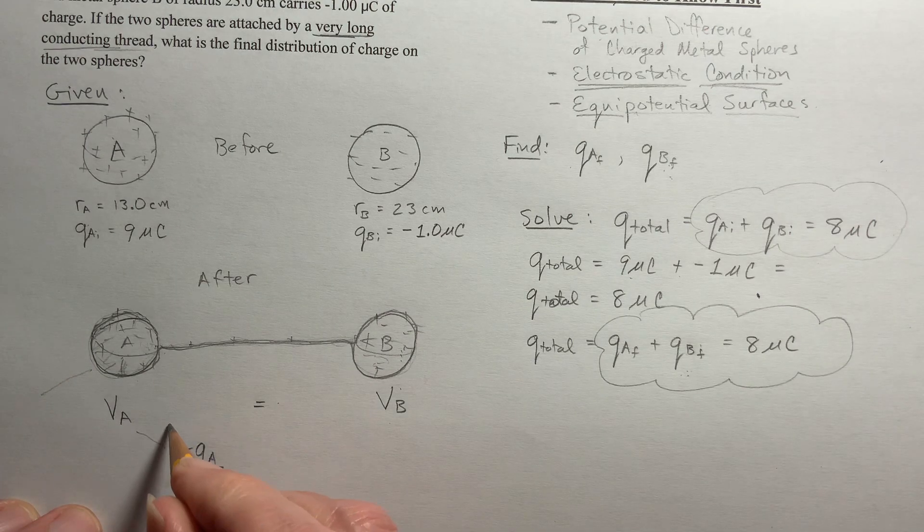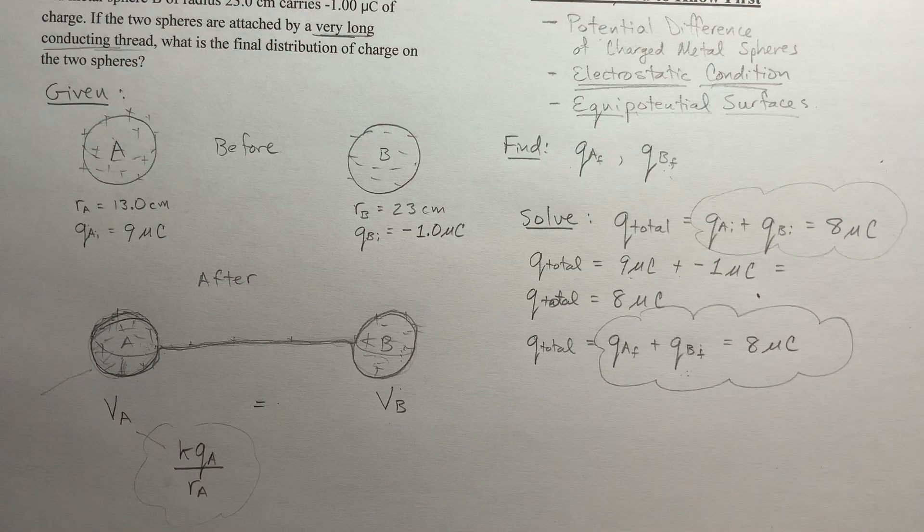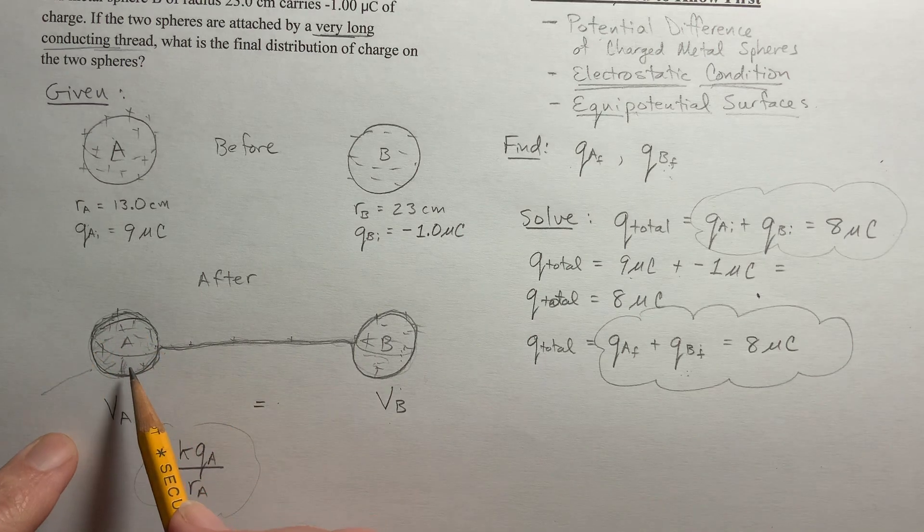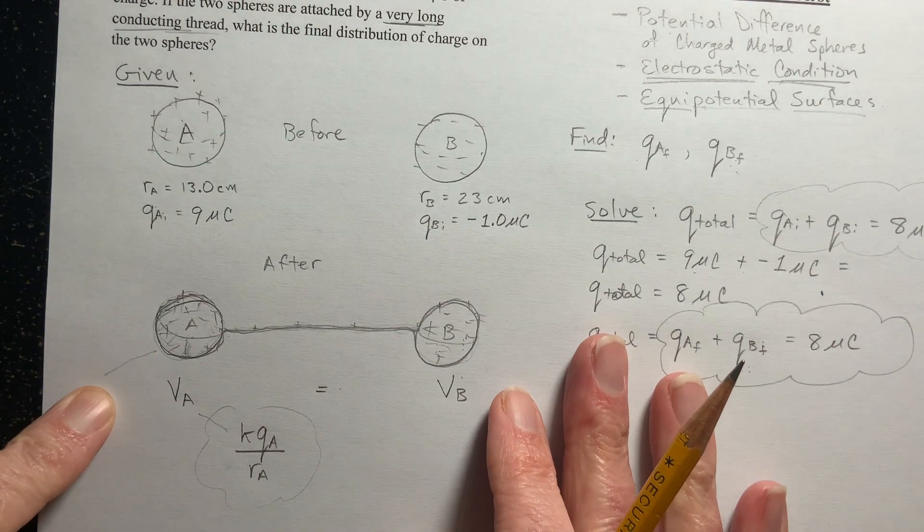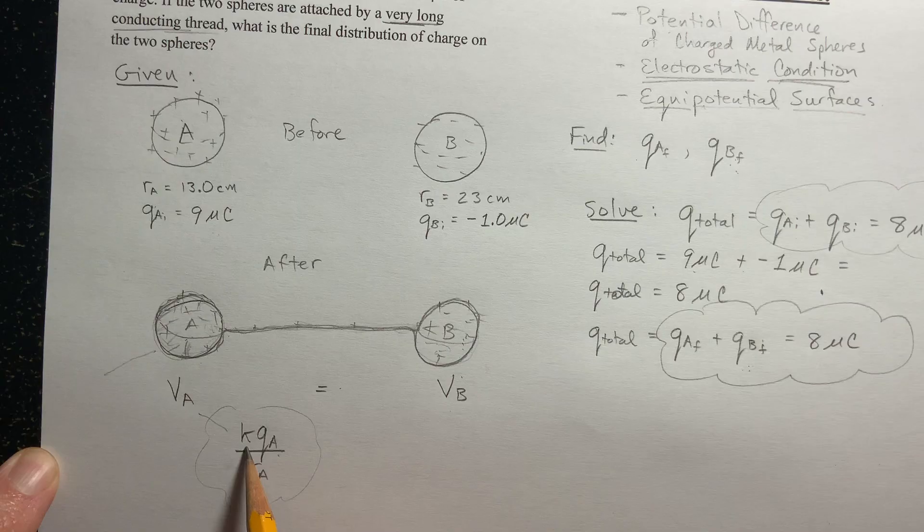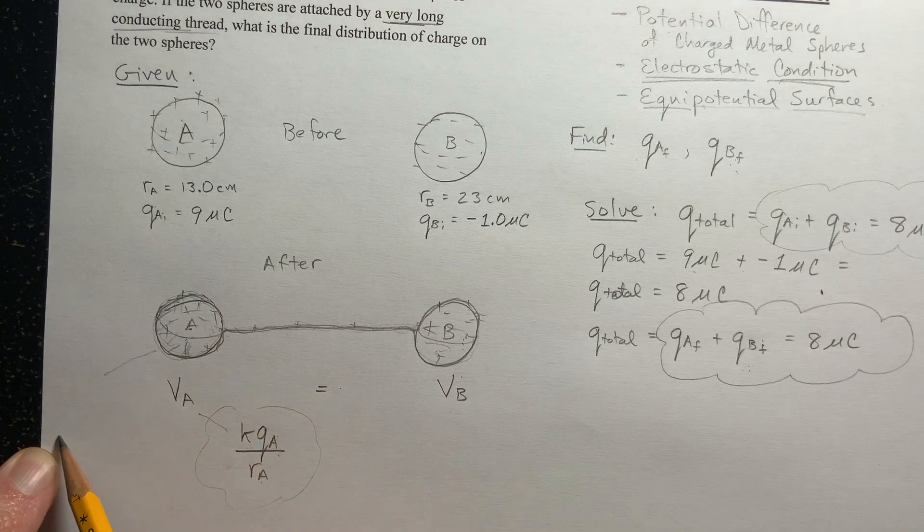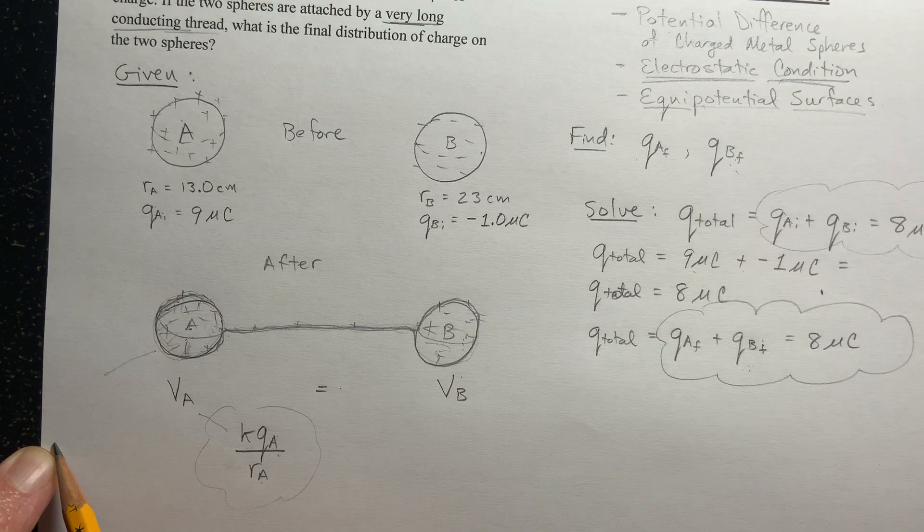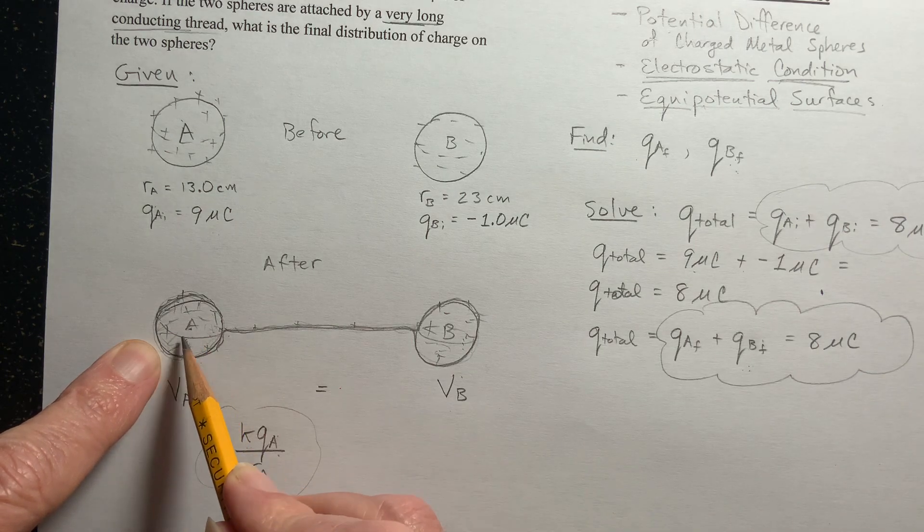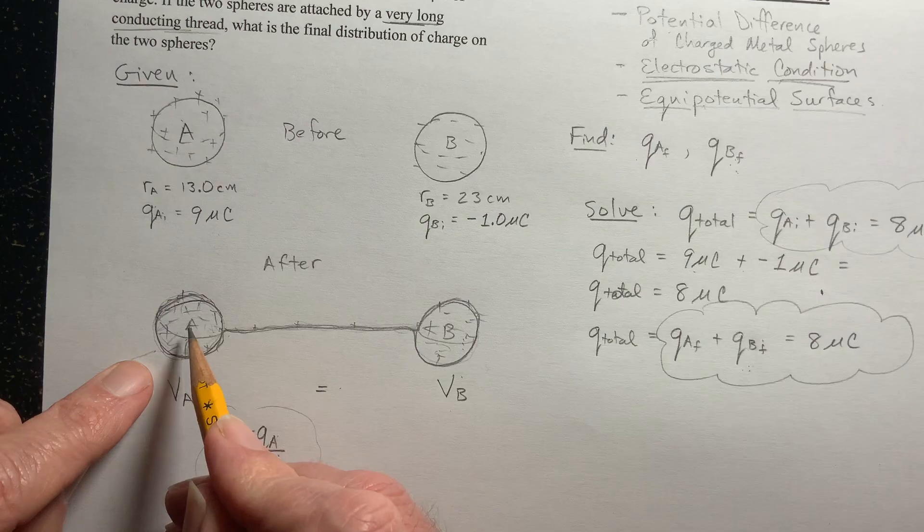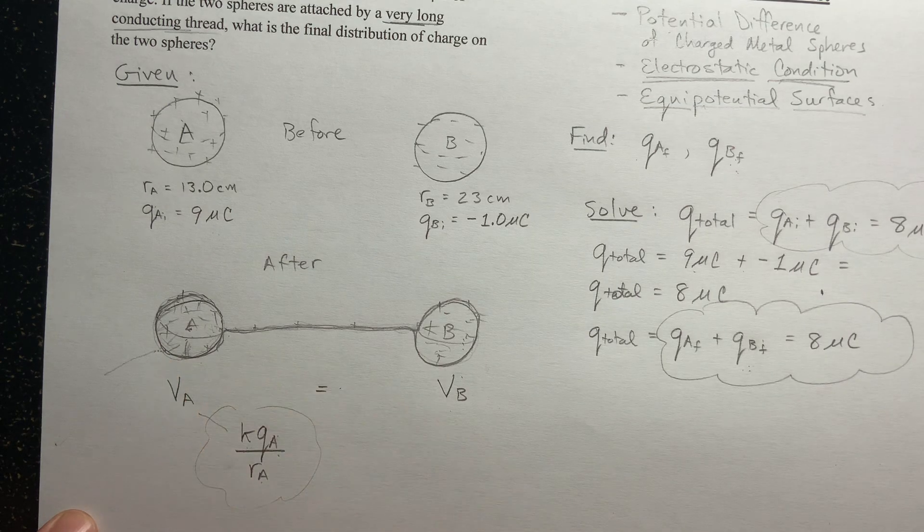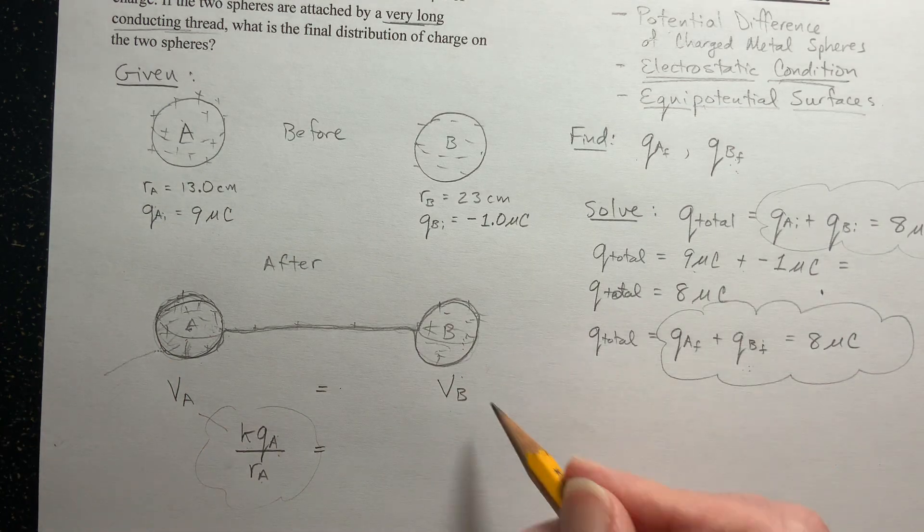Now if you haven't seen this equation before, look up the voltage due to a point charge. Because if you have a sphere, outside the sphere it acts as if it's a point charge. And so the potential outside a point charge is KQ over R, where R is the distance from the center of that point charge out to your location in space. Well, where is our location in space? It's at the surface of this charged sphere. So we can still treat it like it's a point charge located right there, and then this is my location. So this is the voltage, my potential difference at that surface. And now same logic for B.